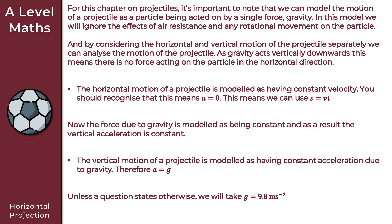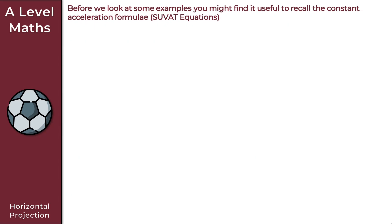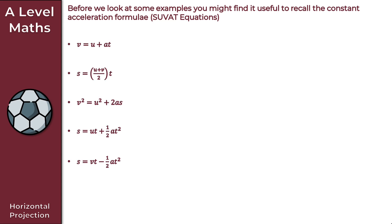Before we look at some examples, let's quickly recap the SUVAT equations — the constant acceleration formulae. We have five equations. Starting with v = u + at, then s = ((u + v) / 2) × t, then v² = u² + 2as, then s = ut + ½at², and finally s = vt − ½at².